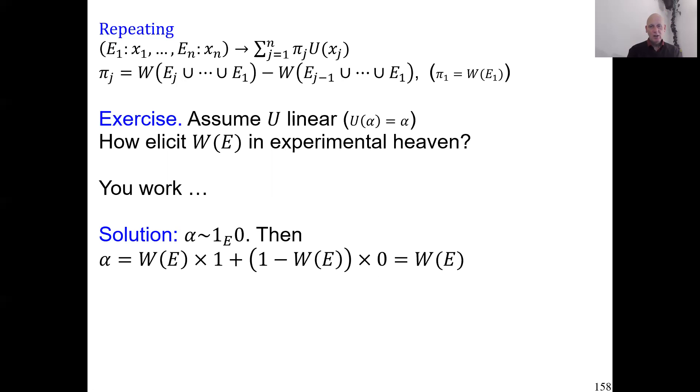So this is simply W of E. So here we have the solution, α is W of E. This is very much like we did with subjective probabilities de Finetti, very easy. And we're done here.